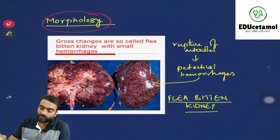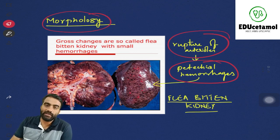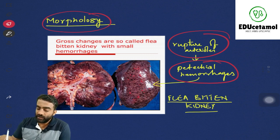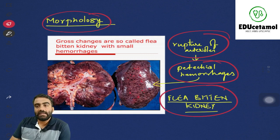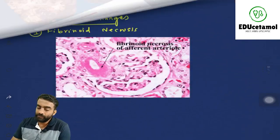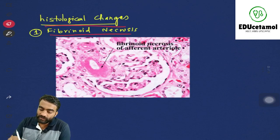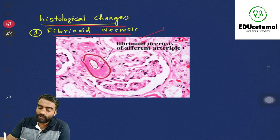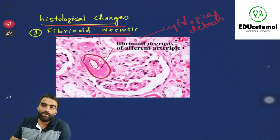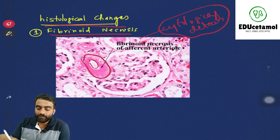As for morphology, you can see petechial hemorrhages all over the kidney because of rupture of arterioles — small arterioles get ruptured due to endothelial damage. This gives the appearance of a flea-bitten kidney. Not only hypertension, but any pathological condition of the kidney where blood vessels are involved can cause flea-bitten kidney. Histologically, the lumen becomes narrowed and you can see fibrinoid necrosis, where the cytological details are lost and you cannot identify cell boundaries or nuclei.